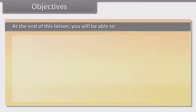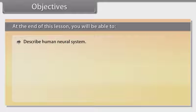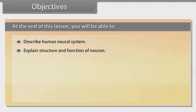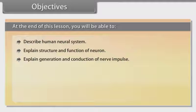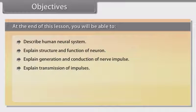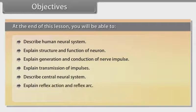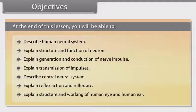Objectives. At the end of this lesson, you will be able to: describe the human neural system, explain structure and functions of a neuron, explain generation and conduction of nerve impulse, explain transmission of impulses, describe the central neural system, explain reflex action and reflex arc, and explain structure and working of the human eye and human ear.